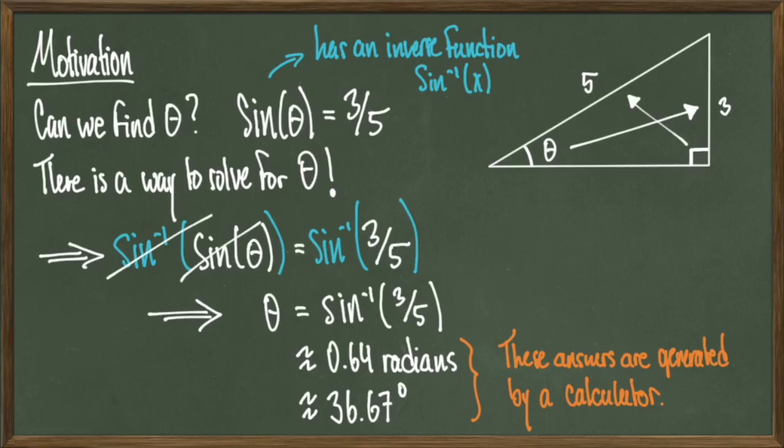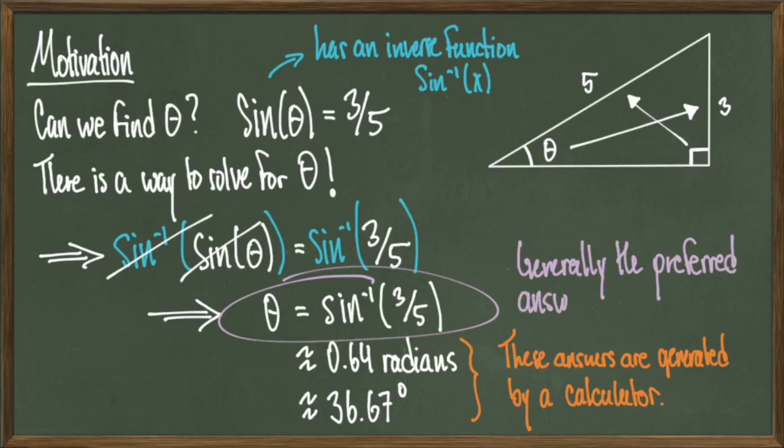We'll talk about how to evaluate inverse trig functions of common angles on the unit circle, but when we're looking at something like 3 over 5, that's typically something that needs to be handled by a calculator. Therefore, theta equals sine inverse of 3 over 5 is generally a preferred answer, especially in a test environment. If you have a scientific or graphing calculator, it's going to have a setting of radians or degrees.